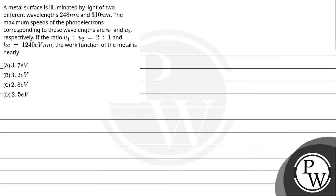Let's read the question. A metal surface is illuminated by light of two different wavelengths: 248 nanometer and 310 nanometer. The maximum speeds of the photoelectrons corresponding to these wavelengths are U1 and U2 respectively. If the ratio U1:U2 is equal to 2:1 and hc is equal to 1240 electron volt nanometer, the work function of the metal is nearly: option A 3.7 eV, option B 3.2 eV, option C 2.8 eV, and option D 2.5 eV.